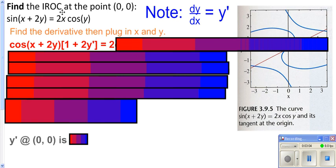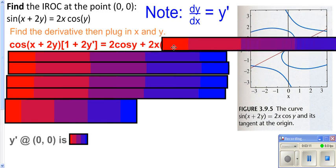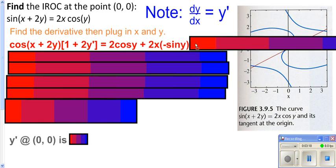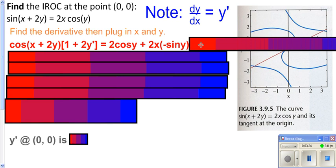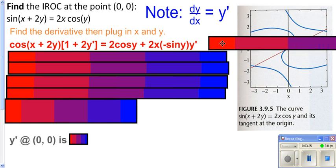So you do the derivative of the first, 2x, which is 2, times the second, plus keep the first the same (which is 2x), times the derivative of cosine y. The derivative of cosine is negative sine, and you've got to multiply by the derivative of the very inside — derivative of y with respect to x, or y prime.